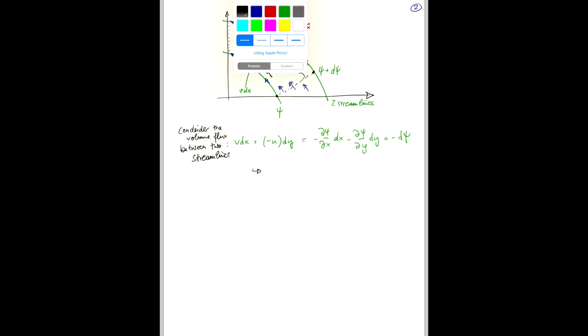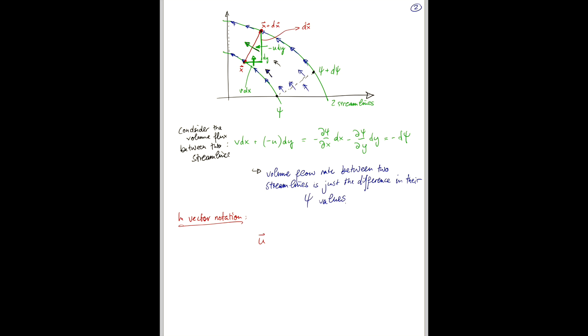So, let me just write that out. Okay, finally, let's talk briefly about the vector notation. So, in vector notation, we can write that u is nothing but k cross the gradient of our function psi, where k hat is the up vector, right? So, k hat is just the up unit vector 0, 0, 1.